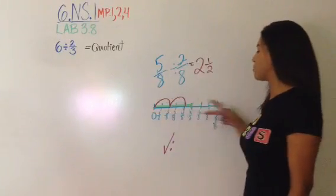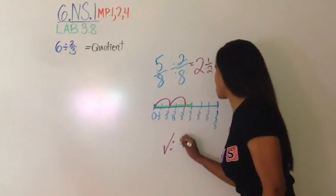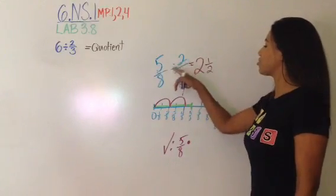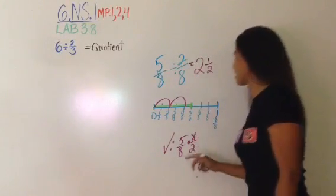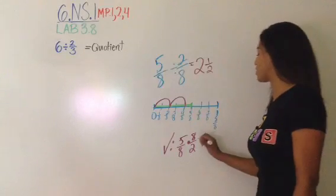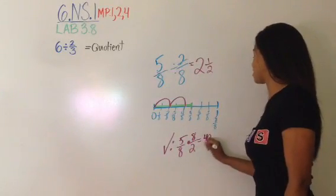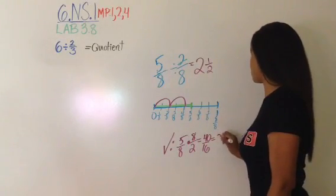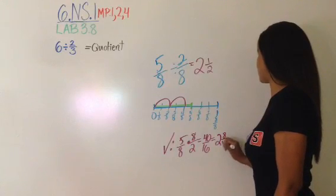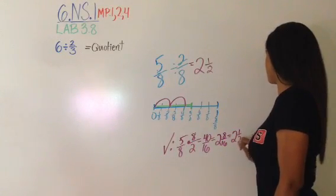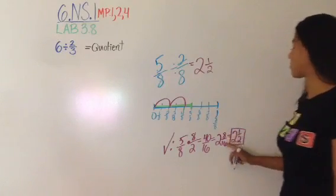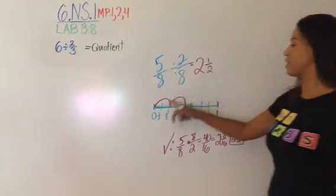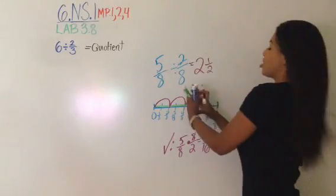We'll use the standard algorithm to check. We have 5/8 divided by 2/8; division is the same as multiplying by the reciprocal, so we multiply 5/8 × 8/2. We can cross-cancel the eights to get 1, or multiply straight across: 5 × 8 = 40, 8 × 2 = 16, giving 40/16. Dividing: 16 goes into 40 twice (32) with 8 remaining, so that's 2 and 8/16. Simplifying 8/16 by dividing top and bottom by 2 gives 1/2, so the answer is 2 and a half — exactly what our model shows.